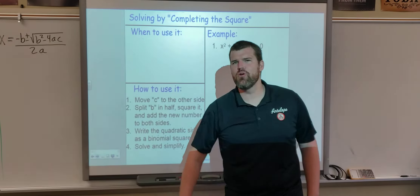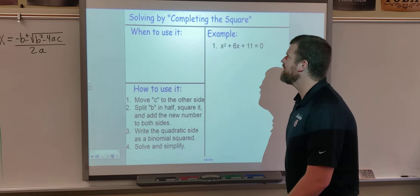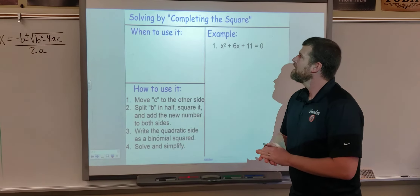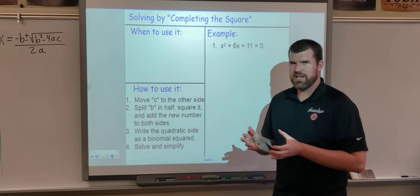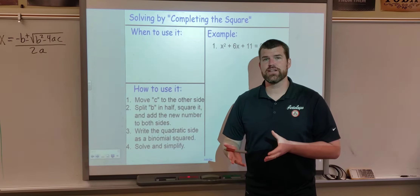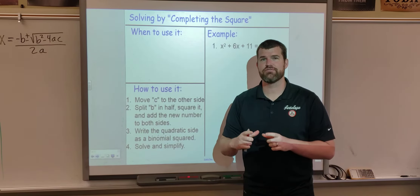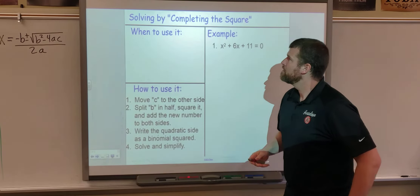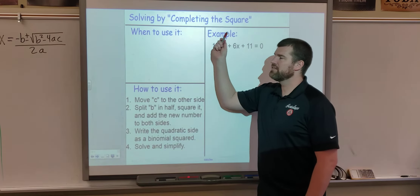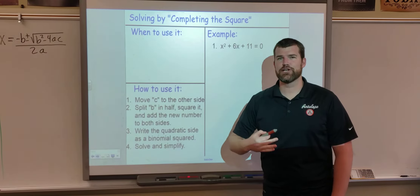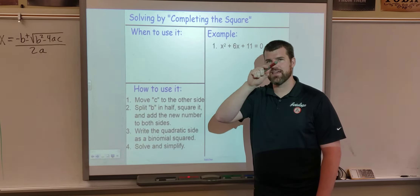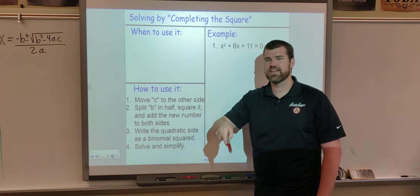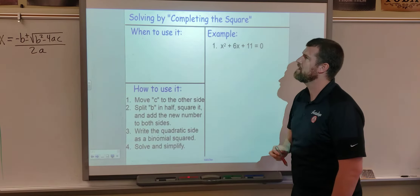We're back for more. Today we're going to focus on completing the square, which sometimes people get confused with factoring because we use the box for this just like we use the box for factoring. But the difference is when we do completing the square, our box has to literally be a square — meaning the same along the top as it is on the side, with the same side lengths on top and on the side.